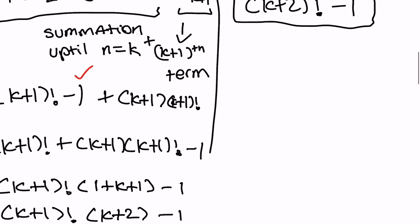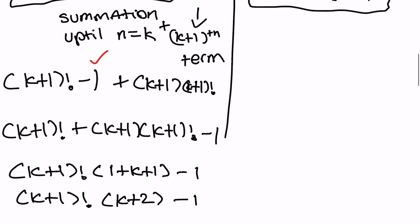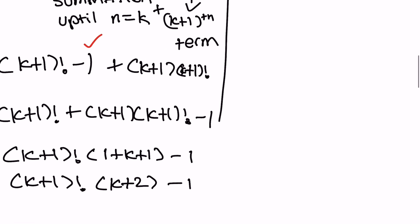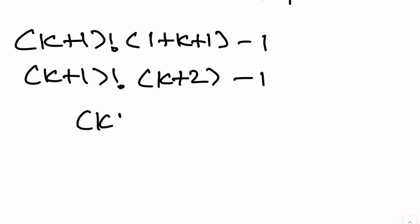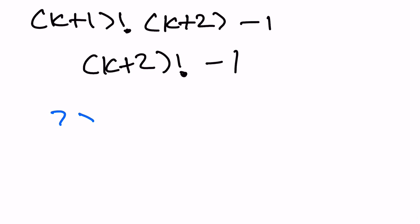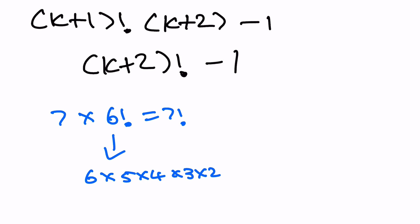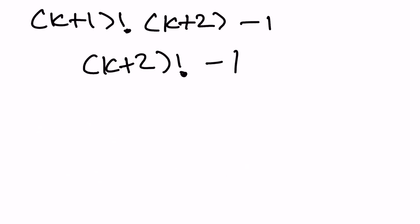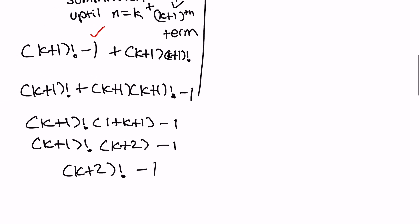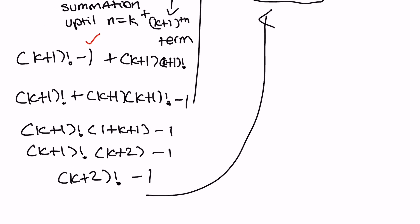That simplifies to k plus one factorial times k plus two, minus one, which is just k plus two factorial minus one. The reasoning is: for example, seven times six factorial is just seven factorial, because six factorial is six times five times four down to one, and multiplying by seven gives you seven factorial. So our LHS is now equal to our RHS, and that is proven.